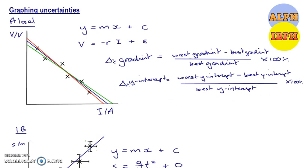So in each case, it's the worst minus the best, all divided by the best, multiplied by 100%, give your percentage uncertainty in your gradient, whatever value that might be.